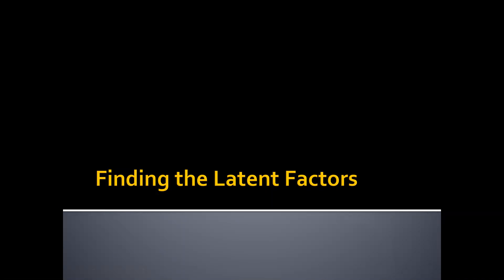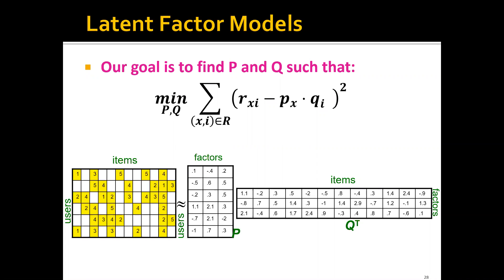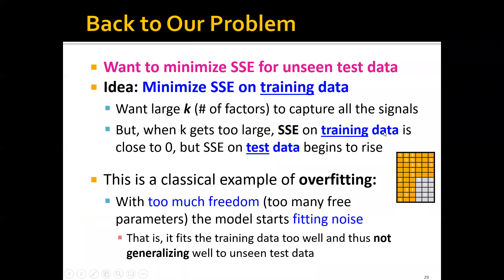Next, let's talk about how to find the latent factors, or equivalently how to solve the optimization problem mentioned before. Remember that our goal is to find the matrix P and Q such that we can minimize the following objective function. This is the reconstruction error of the entries that we have known ratings. We don't care about the entries we don't know anything about. Ultimately we want to minimize the SSE or sum of square error for the unseen test data, but since this is practically impossible to do directly, the idea is to minimize the SSE on the training data.